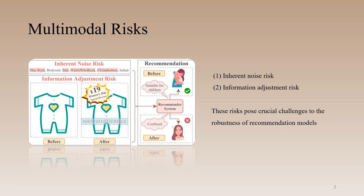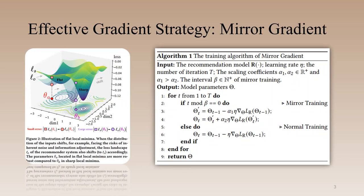These risks pose crucial challenges to the robustness of recommendation models, leading to incorrect recommendations for young girls. In this paper, we analyze multimodal recommender systems from the novel perspective of flat local minima, and propose a concise yet effective gradient strategy called Mirror Gradient, MG.